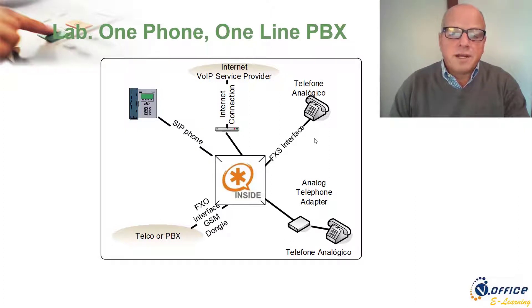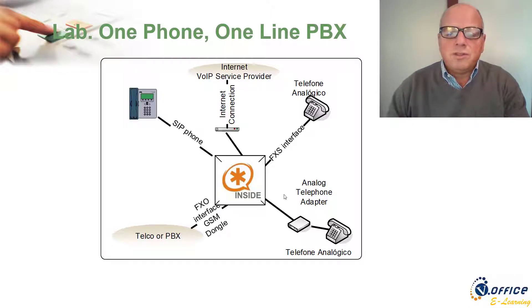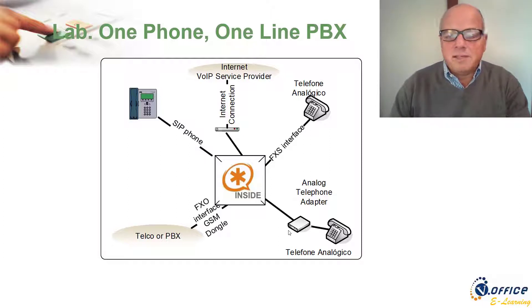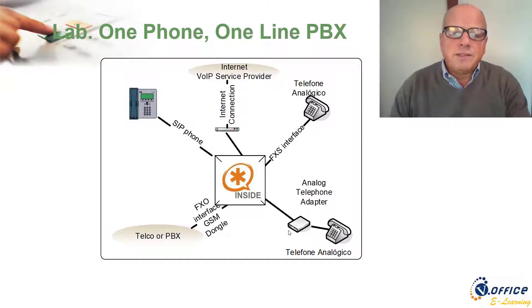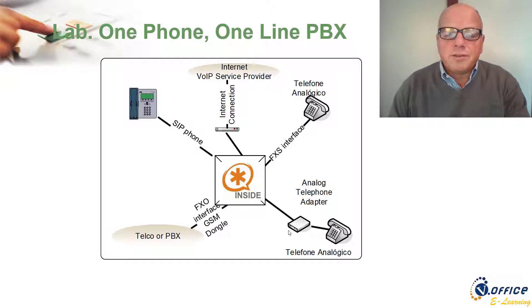You can connect analog phones using an FXS interface. You can buy FXS interfaces from many manufacturers for Asterisk. You can also connect phones using analog telephone adapters — Grandstream has some of these. It's simply an ethernet box that you connect and then plug in an analog phone. These are the ways you can get started.